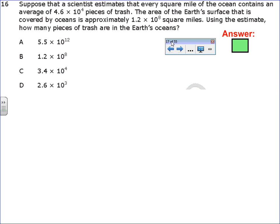The first problem says, suppose that a scientist estimates that every square mile of the ocean contains an average of 4.6 times 10 to the 4th pieces of trash. The area of the Earth's surface that is covered by the ocean is approximately 1.2 times 10 to the 8th square miles. Using the estimate, how many pieces of trash are in the Earth's ocean?